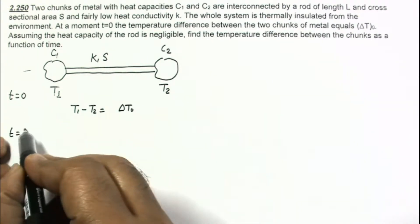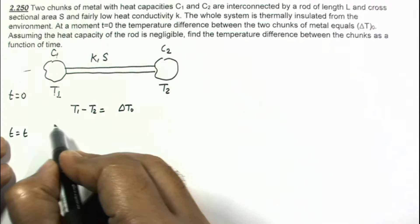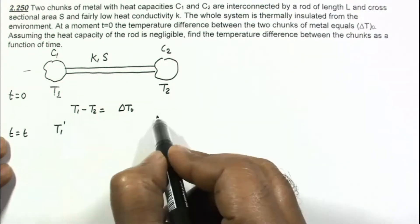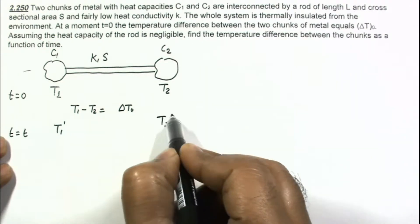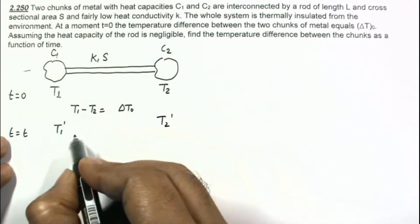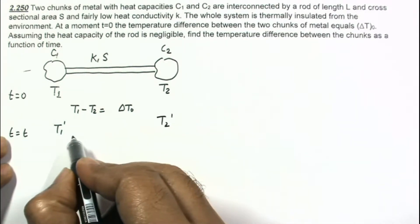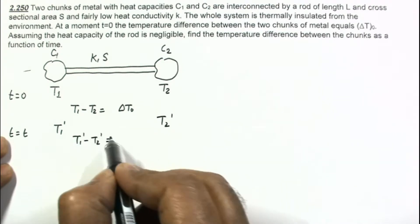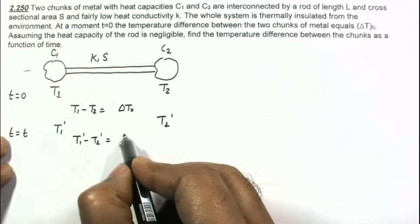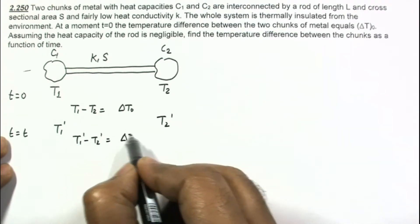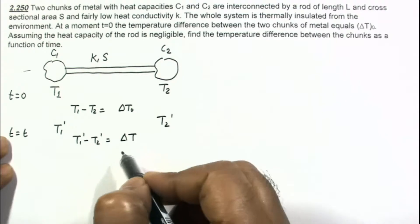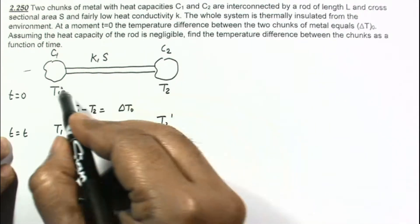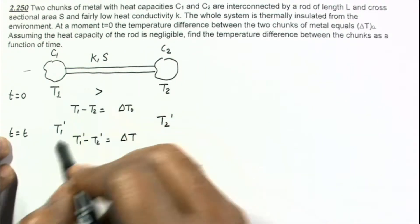At time T equal to T, let us assume the temperatures will be T1 dash and T2 dash. The temperature difference T1 dash minus T2 dash is what we have to calculate, and let us call this delta T. We are assuming T1 is greater than T2.